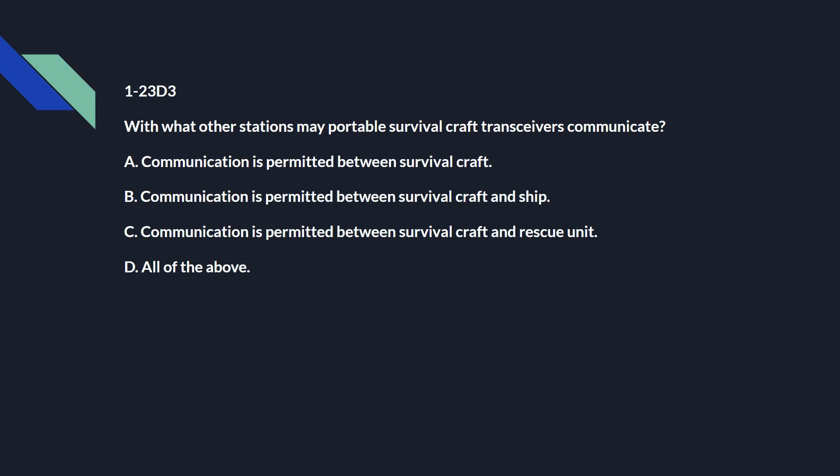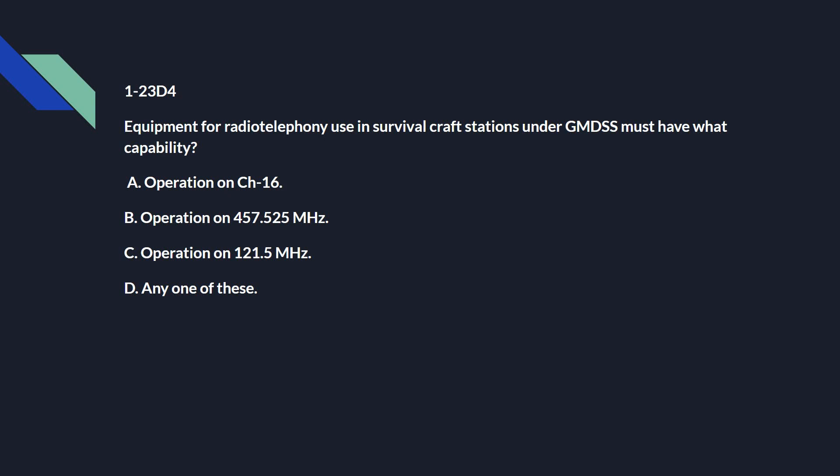1-23 Delta 3: With what other stations may portable survival craft transmitters communicate? And that's all of the above — communication is permitted between survival craft, between survival craft and ship, and between survival craft and rescue unit. 1-23 Delta 4: Equipment for radio telephony use in survival craft stations under GMDSS must have what capability? And that's A: operation on channel 16.